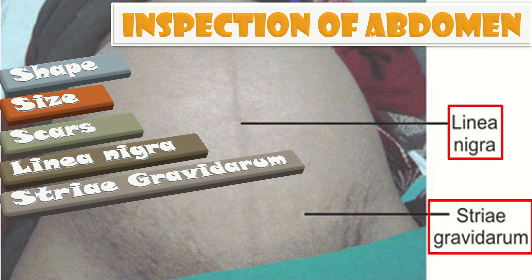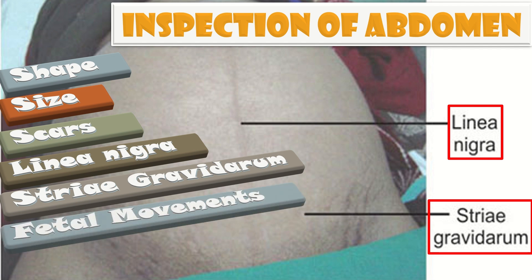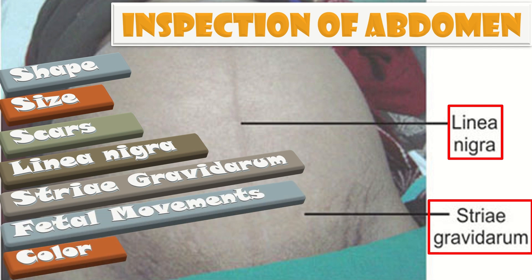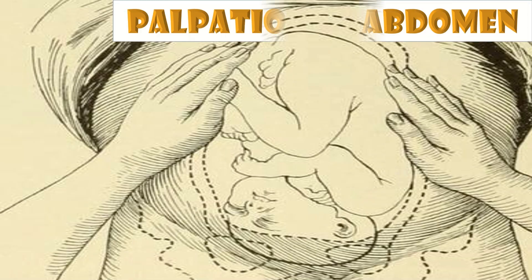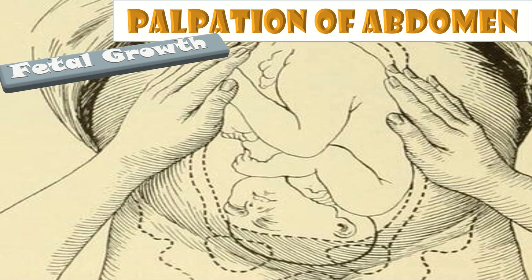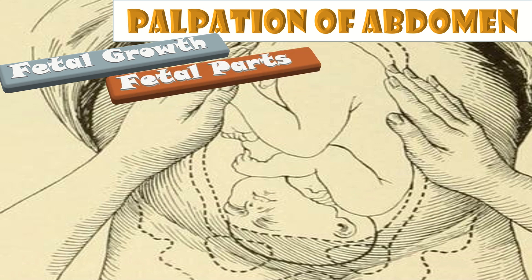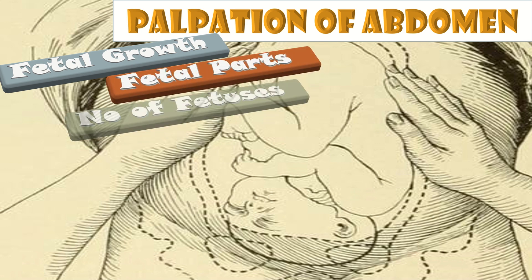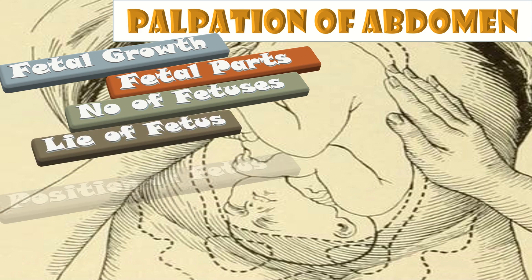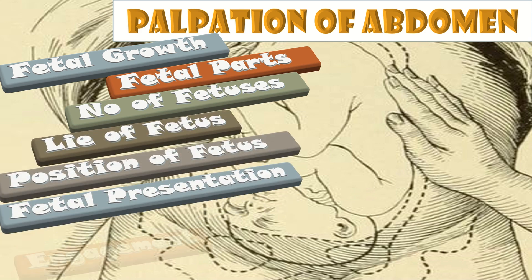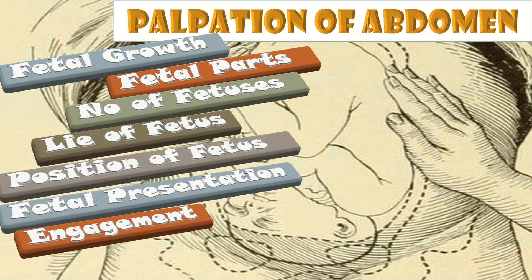Also inspect for fetal movements and the color of the abdomen. The next step is palpation. Palpate the abdomen for fetal growth, as gestational age assessment is done by fundal height measurements. We also palpate for the fetal parts, the number of fetuses, the lie, the position, the presentation, and engagement of the fetal presenting parts.